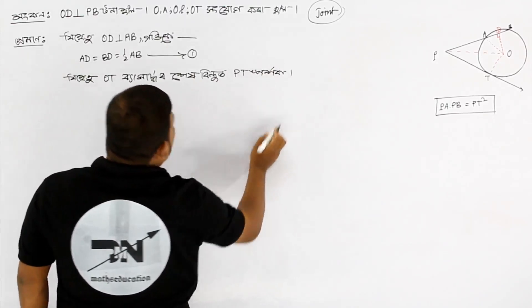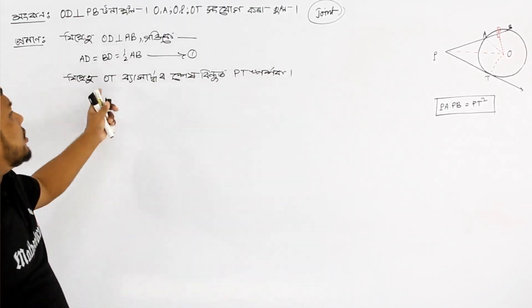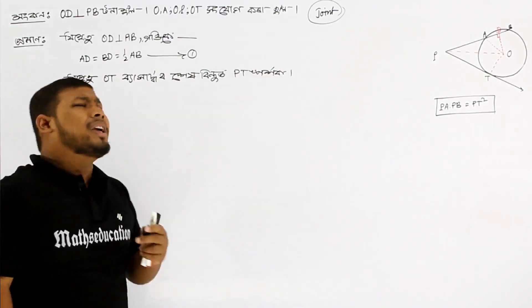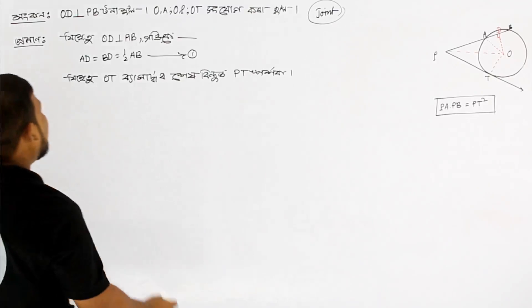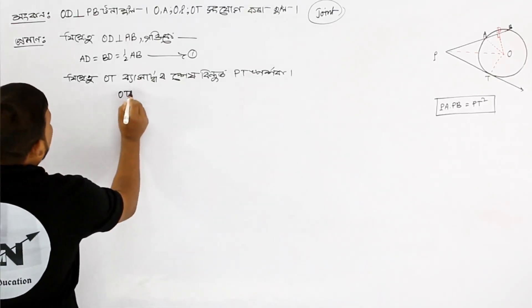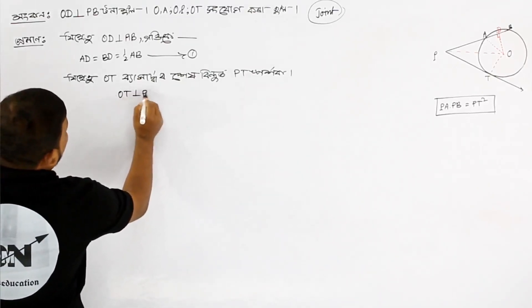Since P T is a tangent at the end point of the radius O T, so we can say O T is perpendicular to P T.